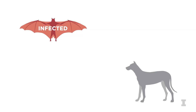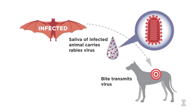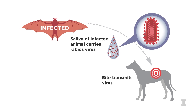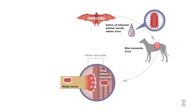A typical rabies infection requires inoculation through the bite of an infected animal. It is actually the rabies-laden saliva which is infectious. The manifestation of disease commonly begins when the virus infects a myocyte, or a muscle cell, and enters the peripheral nerves through the motor endplate, which is the junction of a motor nerve and a muscle fiber.